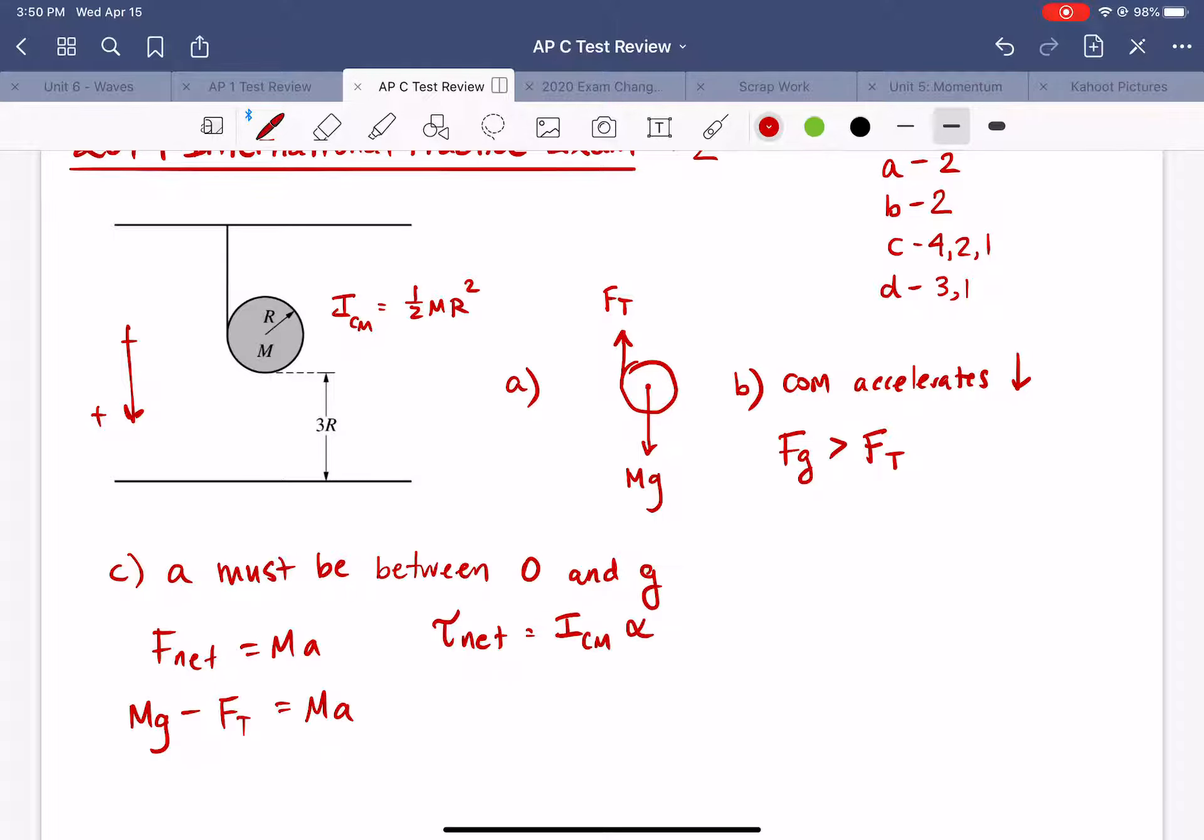That is the net torque equals the moment of inertia times alpha. So the net torque if we consider the torque around the center of mass then gravity creates no torque but the tension force will create a torque equal to the force multiplied by R which is the lever arm distance. That's going to be equal to the moment of inertia 1/2 MR² times the angular acceleration. Well angular acceleration here is going to equal the linear acceleration divided by R.